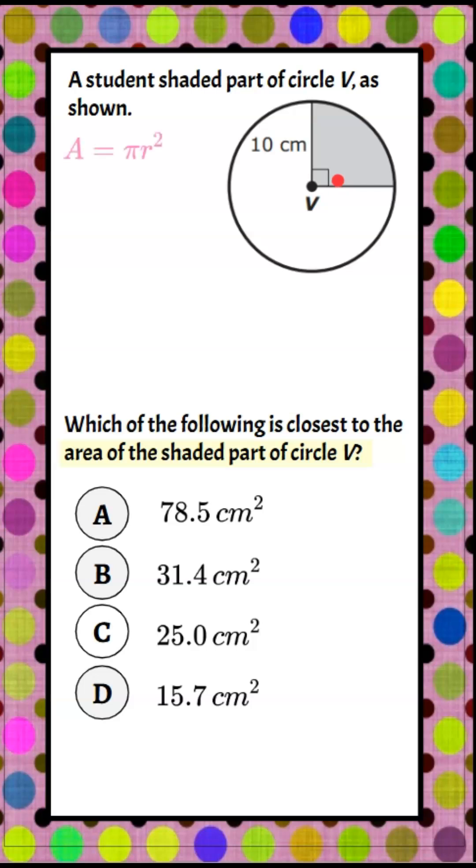I know that the area of a circle is pi r squared, but we're not finding the area of the entire circle, only this sector or section, the shaded part. Because this is a right angle, that's 90 degrees.